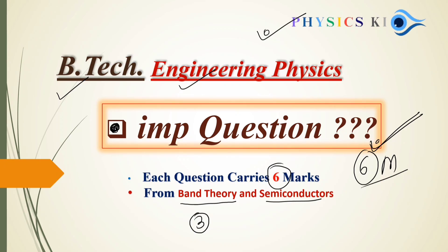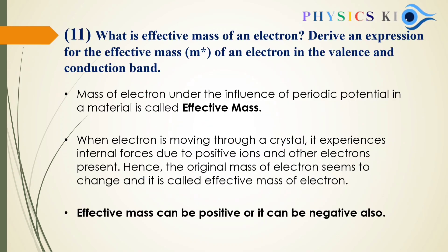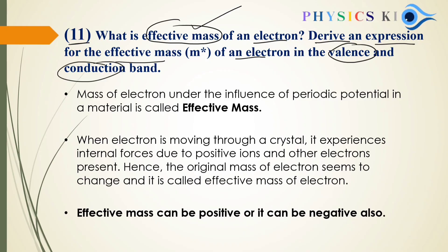Let's cover the important questions in this unit. Our first question — and in our series this is the 11th question — is: What is effective mass of an electron? And derive an expression of the effective mass of an electron in the valence and conduction band. This is a derivation question.